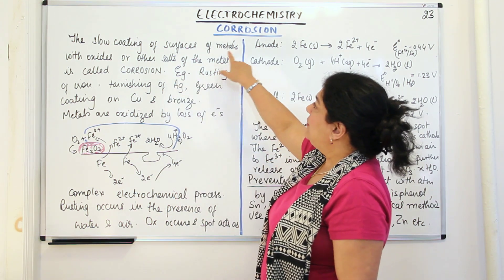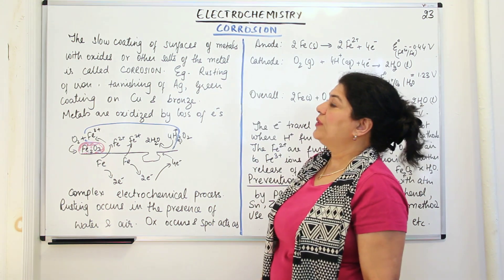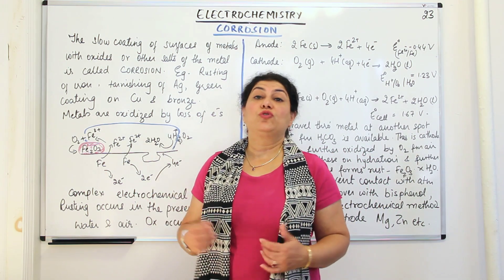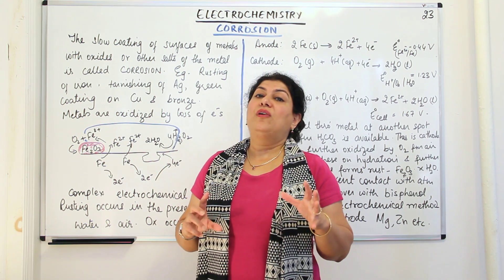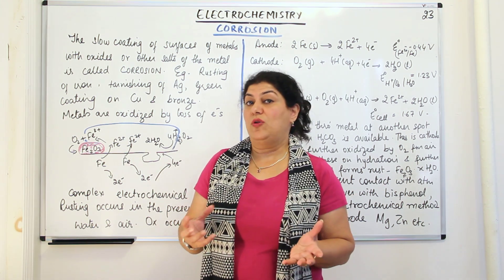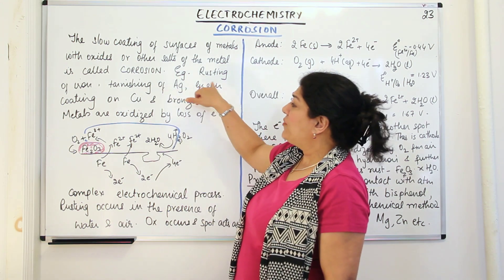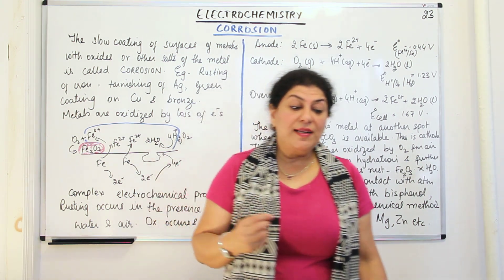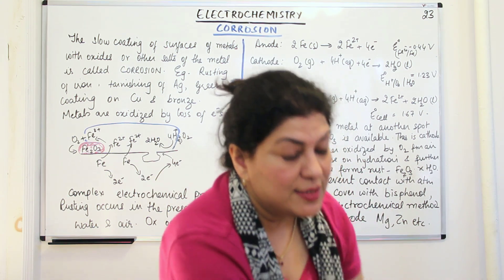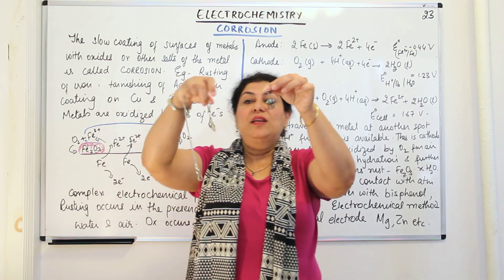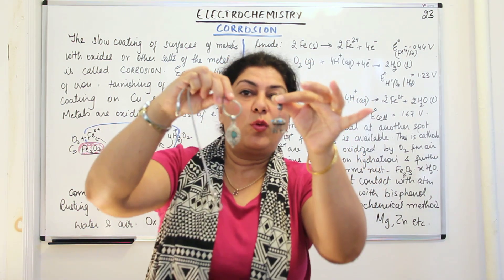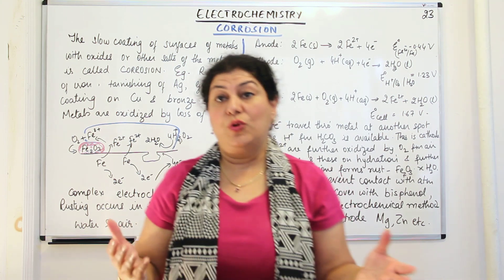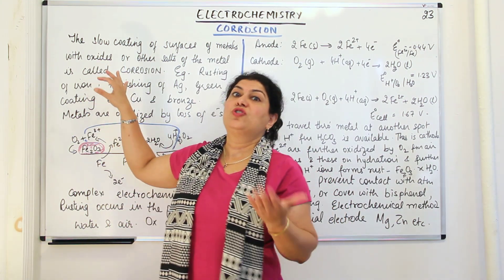The slow coating of the surfaces of metals with oxides or other salts of the metal is called corrosion. Examples of corrosion include rusting of iron — the coating of hydrated ferric oxide is nothing but rust. The second example is tarnishing of silver. Silver results in the formation of a black coating which is silver sulphide. We often find silver jewelry that is tarnished and acquires a blackish coating on it. So tarnishing of silver is also corrosion of silver.